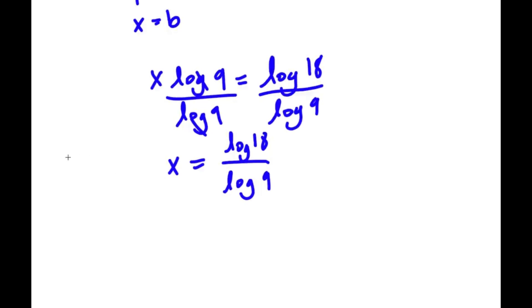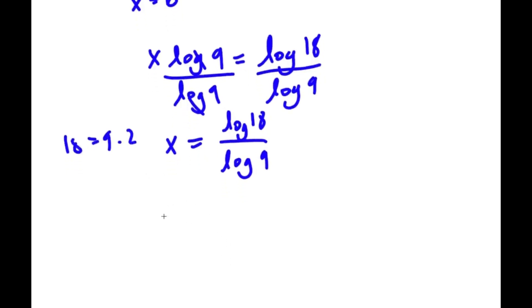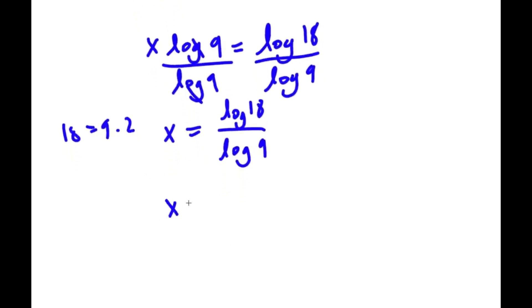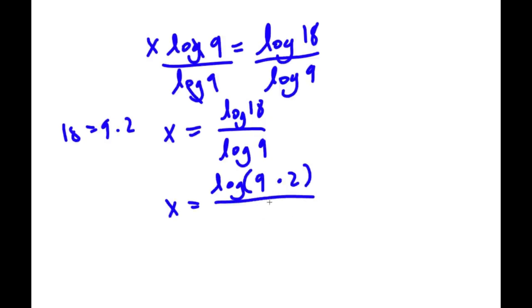Now 18 is equal to 9 times 2. So I'm going to rewrite log 18 as log 9 times 2, and now we divide this by log 9.